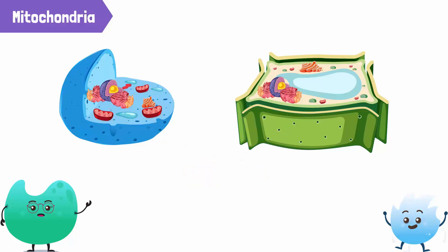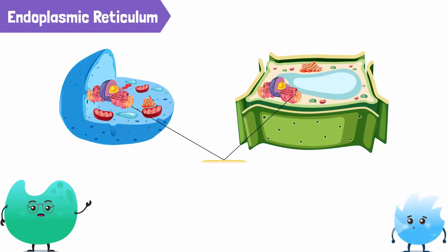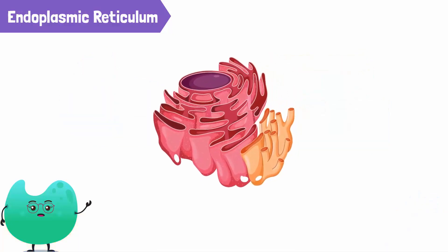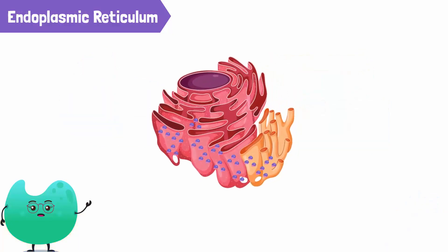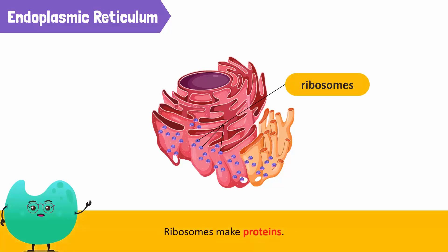Then we have the endoplasmic reticulum, or ER for short. It's a cellular network that takes molecules where they need to go within the cell. They contain tiny balls of ribosomes that work like tiny factories. Ribosomes make proteins, and the ER transports proteins to the Golgi apparatus.